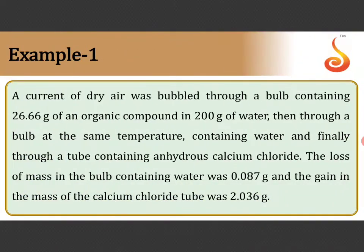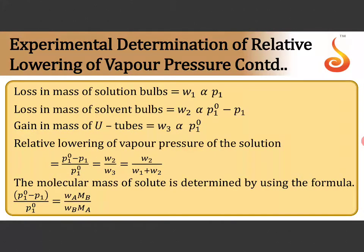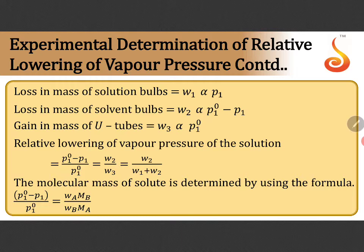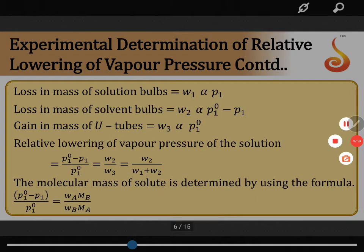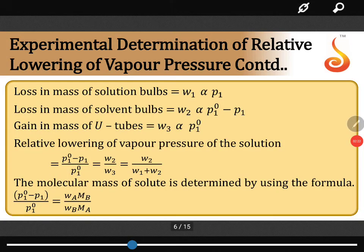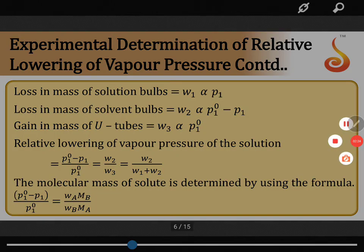So now, going to the next one, this is what we are trying to explain to you - how the relative lowering of vapor pressure can be determined without knowing the masses and molar masses of the solvent and solute. That is called Ostwald's method.